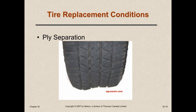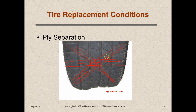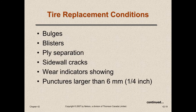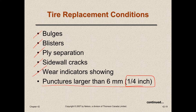Ply separation happens on the inside — the cords that run across split open and push outward, often causing a customer complaint of tire shaking. To summarize tire replacement conditions: bulges, blisters, ply separation, sidewall cracks, wear indicators showing. If there's a puncture hole larger than a quarter of an inch, you need to replace the tire — a patch or plug can't fix that.